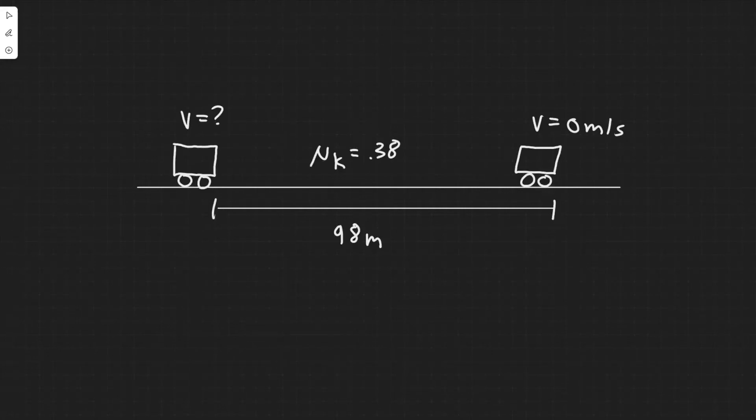In this problem we're told at an accident scene on a level road, investigators measure a car's skid mark to be 98 meters long. It was a rainy day and the coefficient of friction was estimated to be 0.38. Use these data to determine the speed of the car when the driver slammed on and locked the brakes. Why does the car's mass not matter?